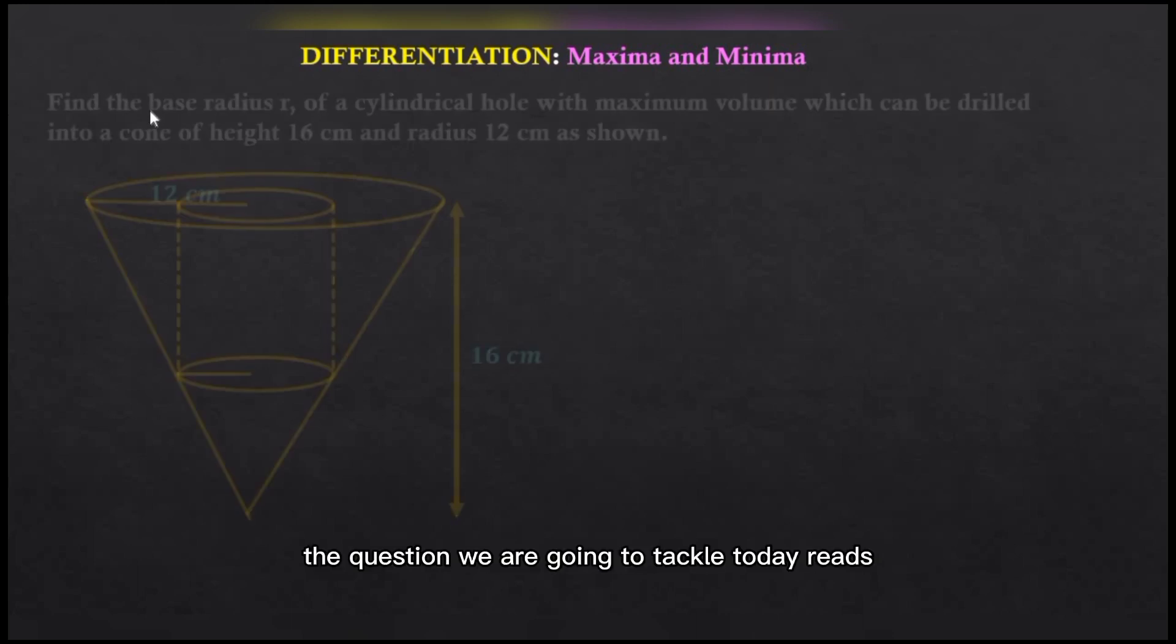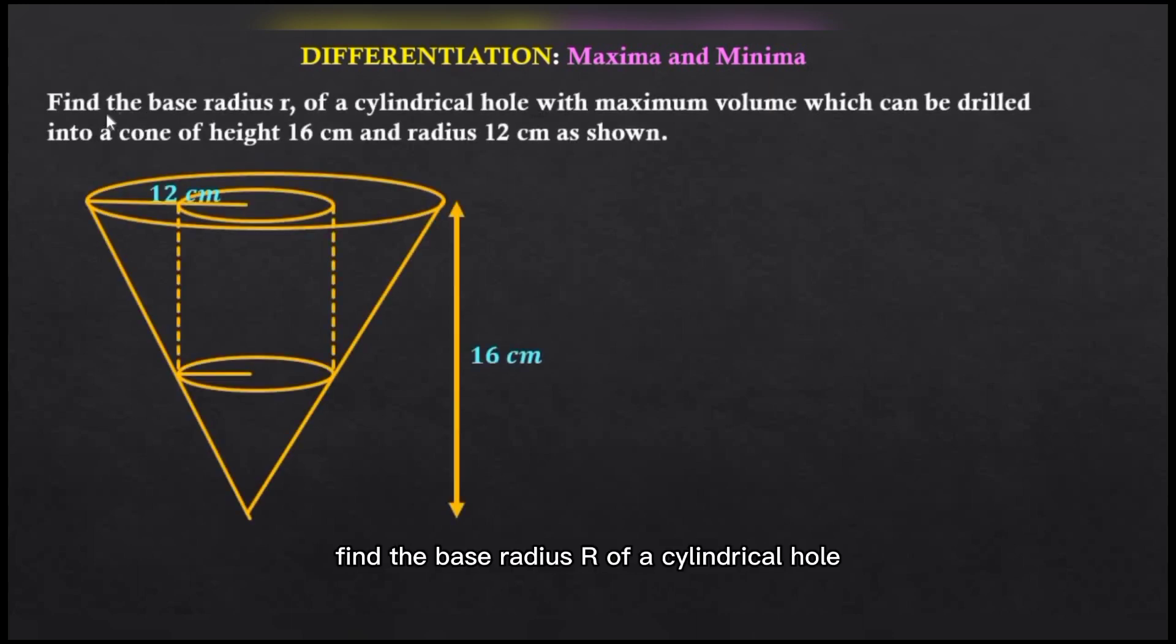The question we are going to tackle today reads: find the base radius r of a cylindrical hole with maximum volume which can be drilled into a cone of height 16 centimeters and radius 12 centimeters as shown.